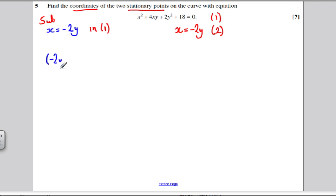So, let's do it. Instead of writing x, we're going to have minus 2y squared. We're going to have plus 4. Instead of x, we're going to have minus 2y times y. The 2y squared is fine. Plus 18 is 0.